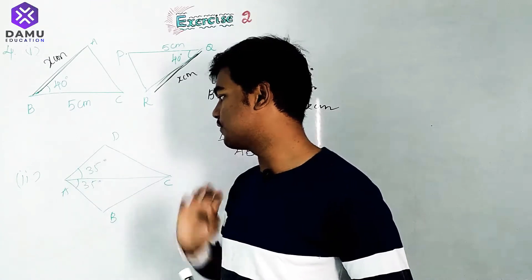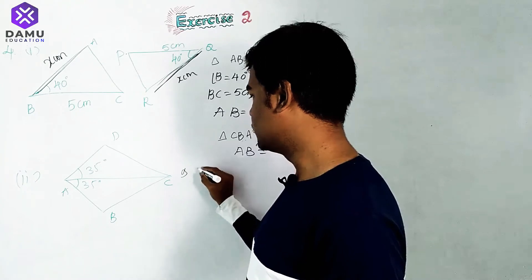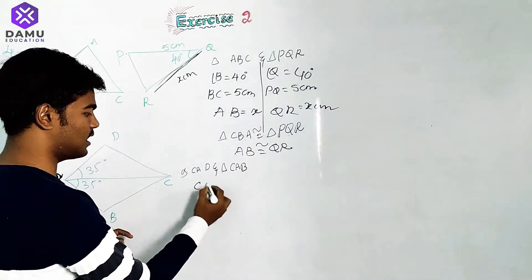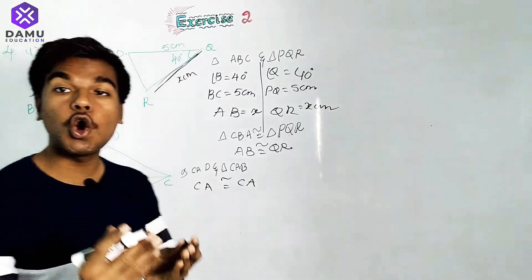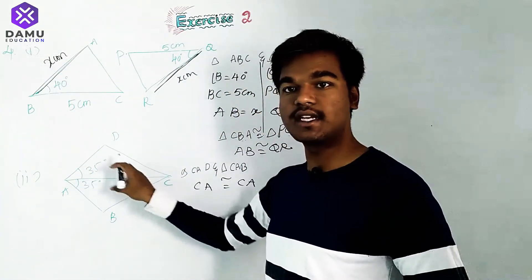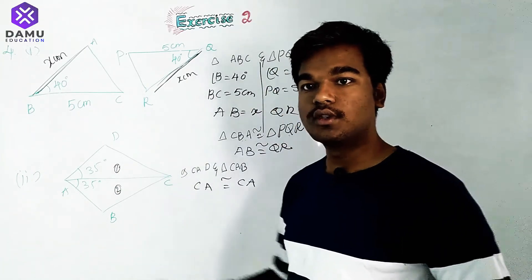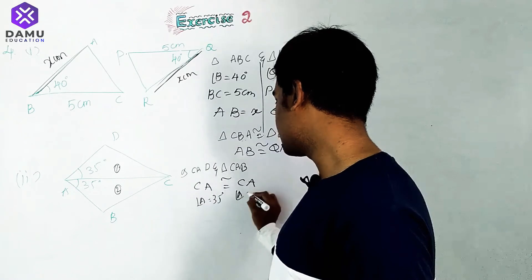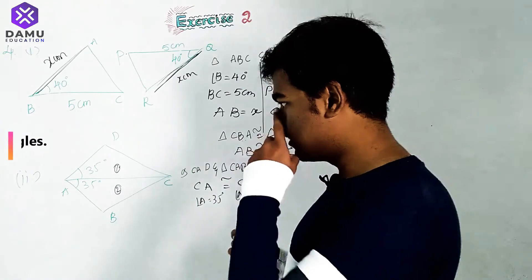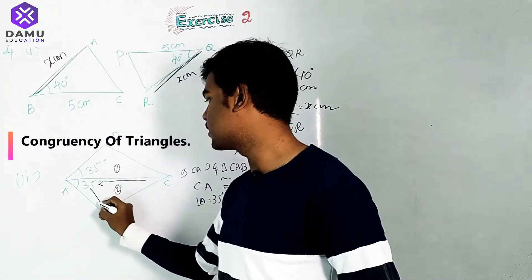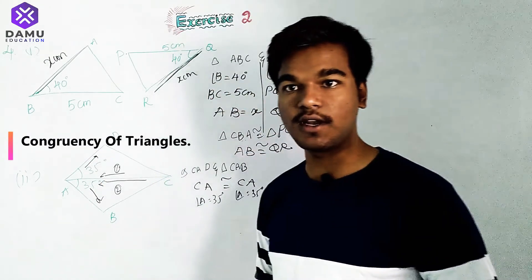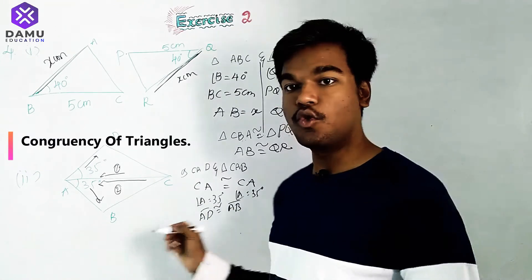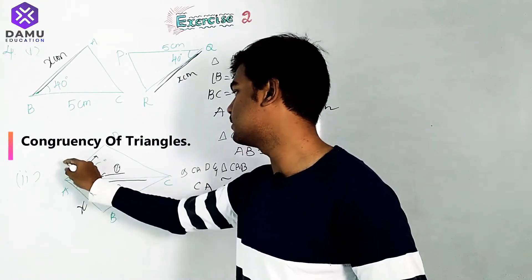For the second part with 35 degrees given, let triangle CAD and triangle CAB. Side CA is common to both triangles and is therefore congruent to itself. Angle A equals 35 degrees in both triangles. So AD should be congruent to AB, with both equal to x, satisfying the side-angle-side pattern.